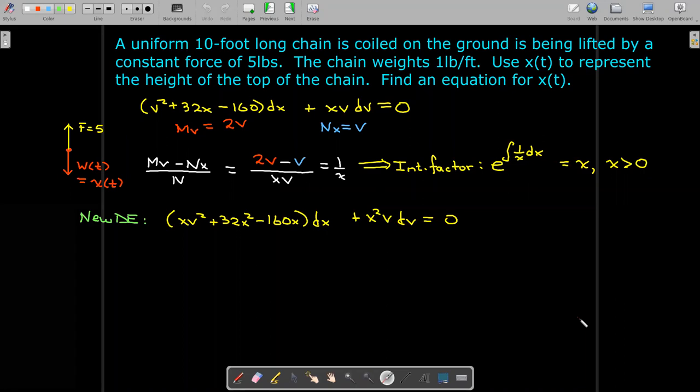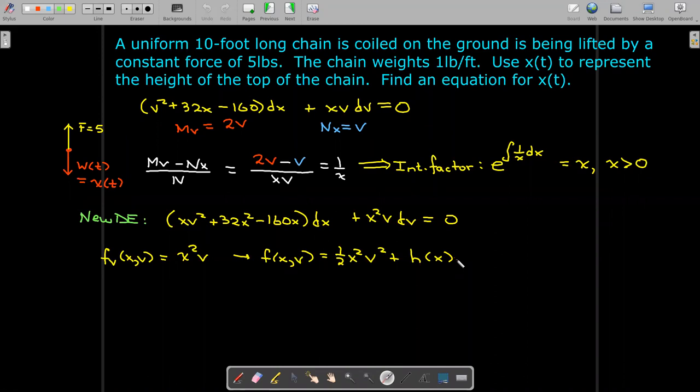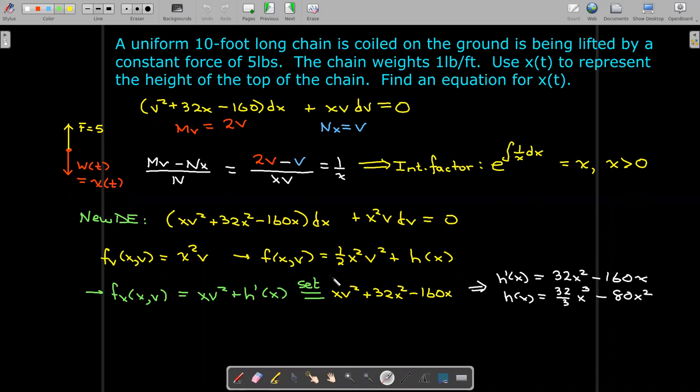Now we have an exact equation. I'm going to look at the second term. I know that the second term must be the partial derivative of f with respect to v. So I'll anti-differentiate with respect to v. Instead of getting a constant, I get this constant function of integration which depends on x only. Then I take that expression, calculate the partial derivative with respect to x, and set that equal to the M function here, which leads to h' = 32x² - 160x. I can anti-differentiate to find h(x).